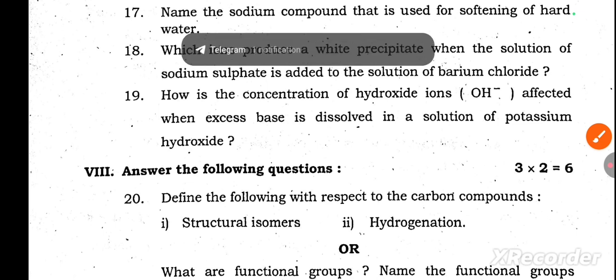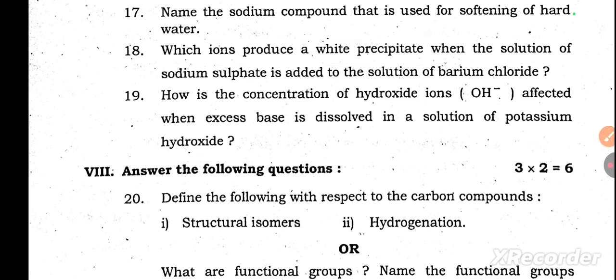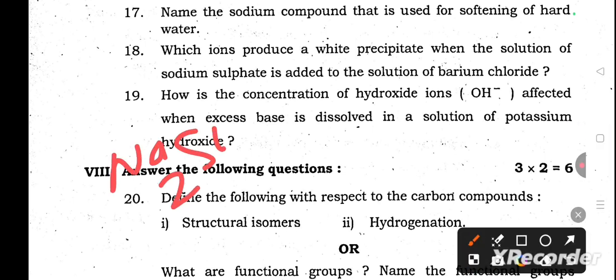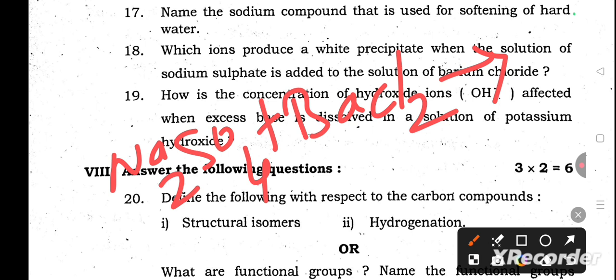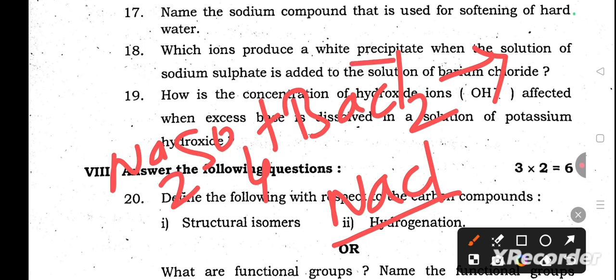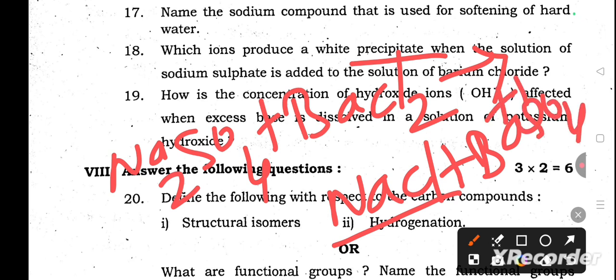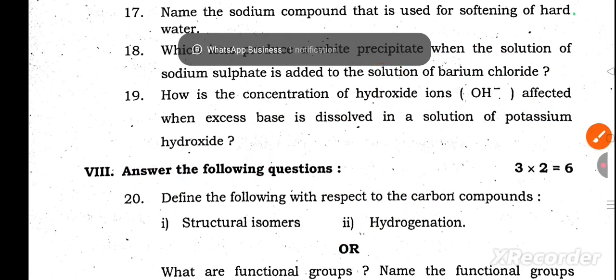Question 18: Which ions produce a white precipitate when a solution of sodium sulfate (Na₂SO₄) is added? Sodium chloride will not give any precipitate. The other product is barium sulfate — it is the barium ions and sulfate ions that produce the precipitate.